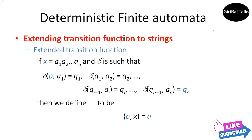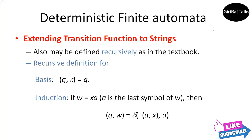We define delta-hat by induction on the length of the input string. The basis is: delta-hat of q comma epsilon equals q — that is, if you are in state Q and read no inputs, you remain in state Q. For the inductive step, suppose W is a string of the form XA — that is, A is the last symbol of W and X is the string consisting of all but the last symbol. For example, W equal to 1,1,0,1 is broken into X equal to 1,1,0 and A equal to 1.